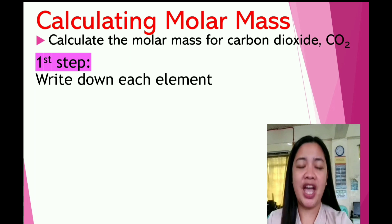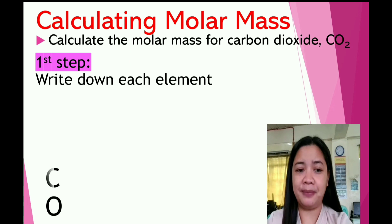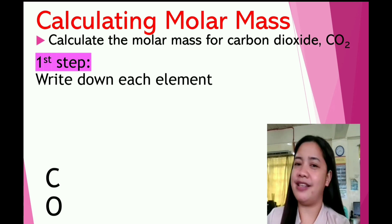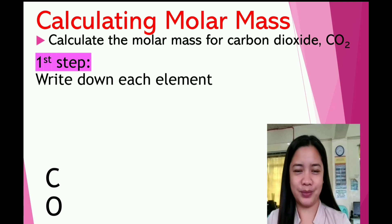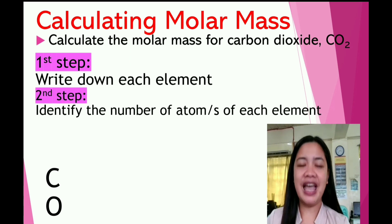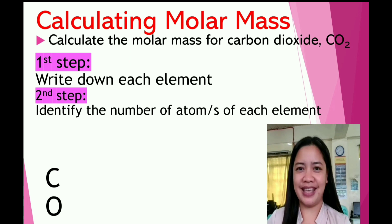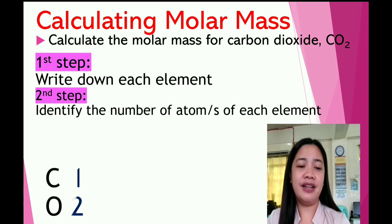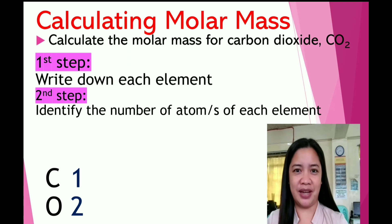Step one: write down each element. For our given problem, the elements are carbon with the symbol C, and oxygen with the symbol O. Step two: identify the number of atoms of each element. For our given problem, carbon has one atom, and oxygen has two atoms.